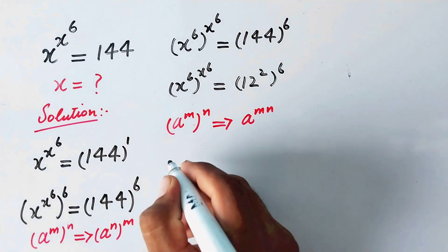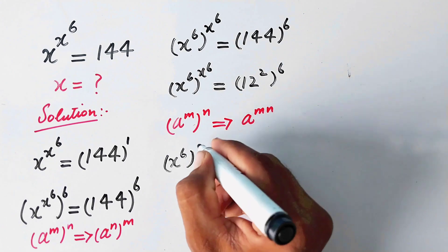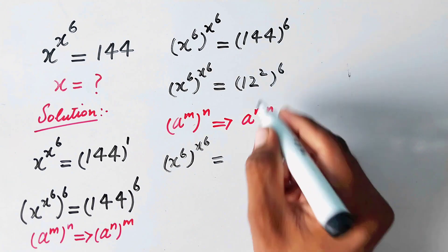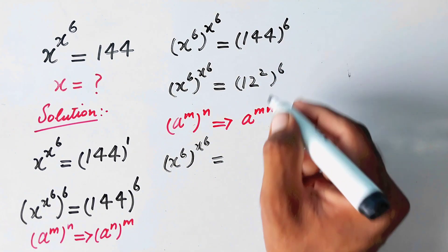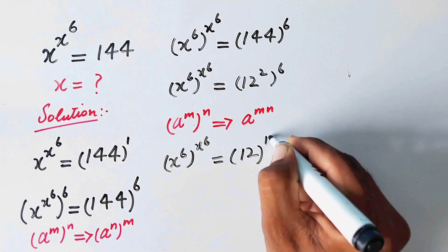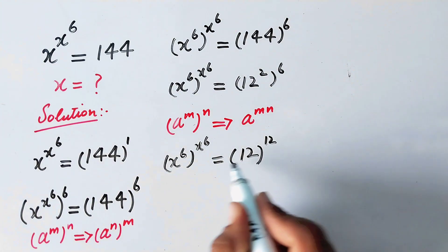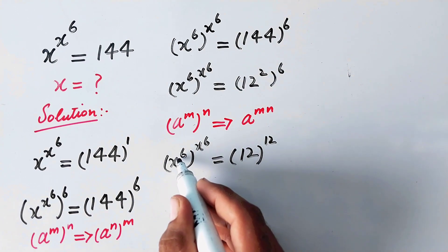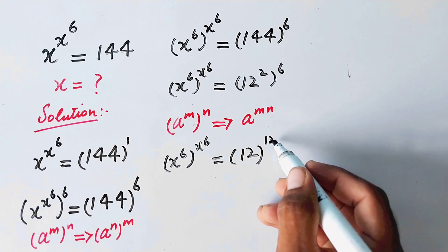So now we can write (x^6)^(x^6) equals (12^2)^6, and the powers will multiply to give 12 raised to power 12. Now we can see that the values on both sides are corresponding to each other: x^6 and x^6, and 12 with power 12.